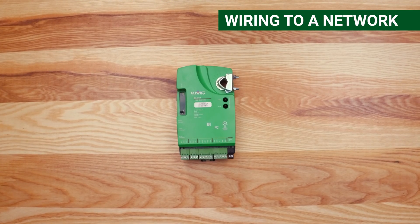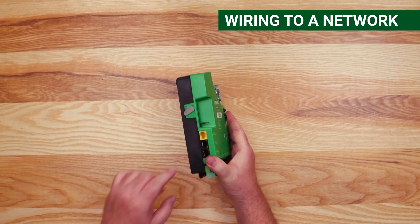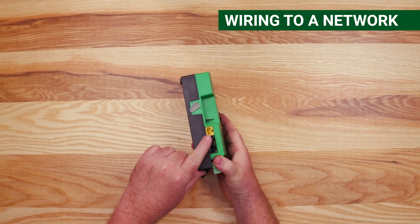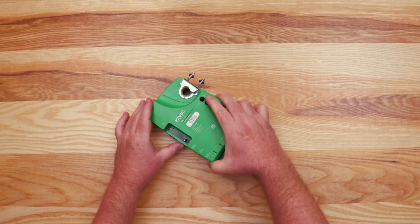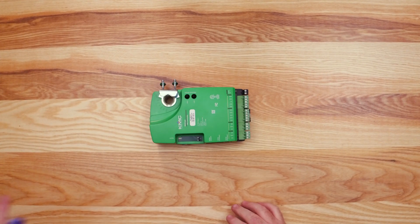In this video, let's cover wiring to a network and the inputs. Let's begin with the wiring of the controller to a network. This BAC 9000 series controller connects to the network via BACnet over IP. This model includes two Ethernet ports with a built-in switch, allowing for easy daisy chaining on the network.